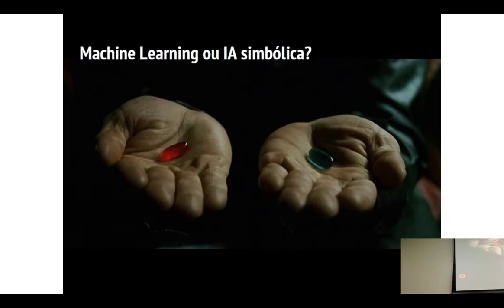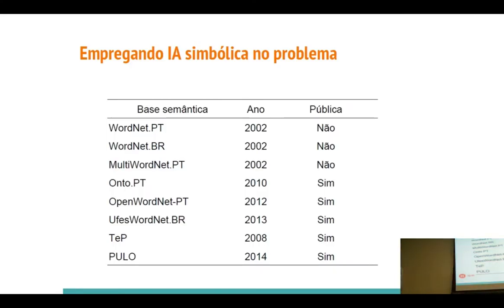Então, a gente começou a extrair features. Dentro dessa etapa de pré-processamento, a gente se deparou com a velha questão: simbólica ou machine learning? Usar só recursos simbólicos às vezes não é tão simples. Tu tem bases defasadas, de 2000, 2002, e algumas anotadas por algoritmos de aprendizagem de máquina. Qual a confiança dessas anotações? Para o Português do Brasil, até onde eu tenho conhecimento, nenhuma WordNet é tão completa quanto a de Princeton. Algumas são bem defasadas e ainda são fechadas — e as que não são públicas são pagas.